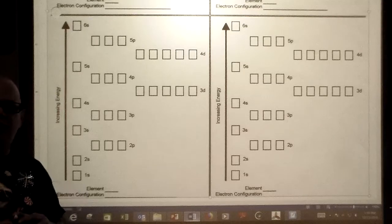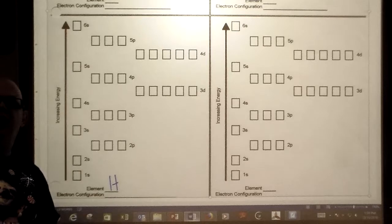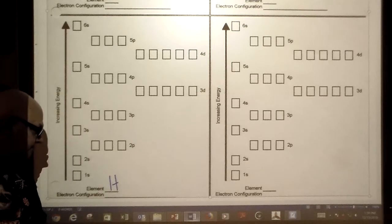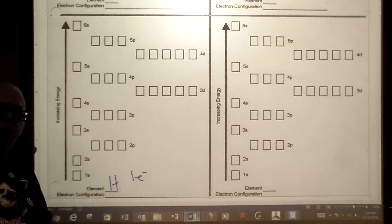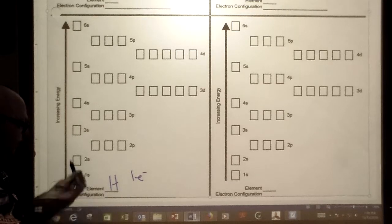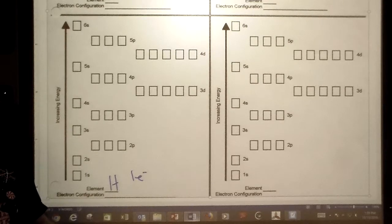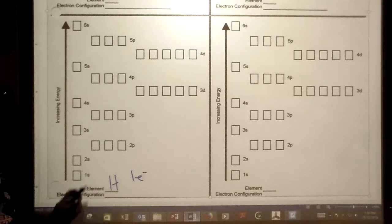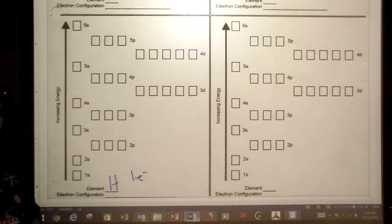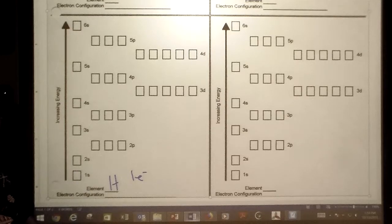Let's start with element number one, hydrogen. Hydrogen is the smallest element, most plentiful in the universe. It's got one electron. Where in these boxes will this one electron go? It's going to always go for the lowest available energy, that's the Aufbau principle.